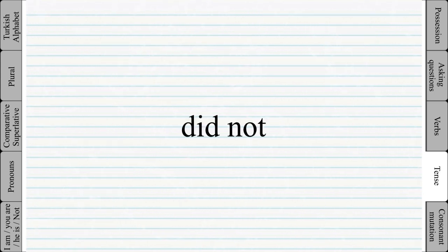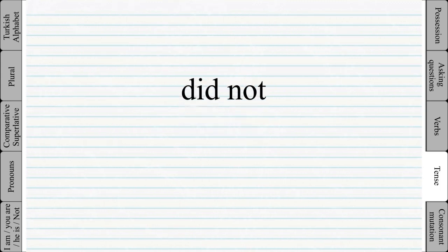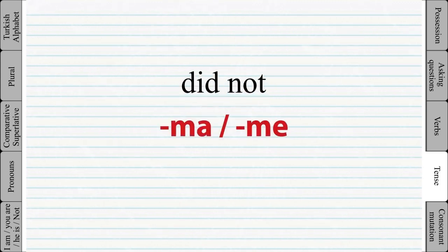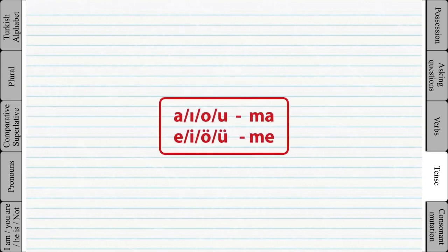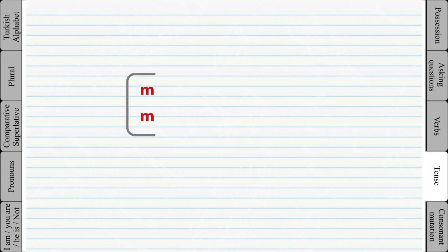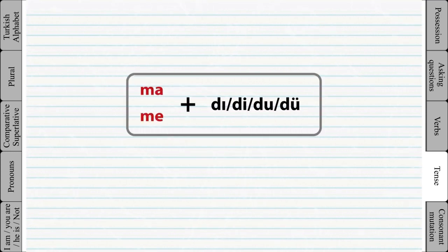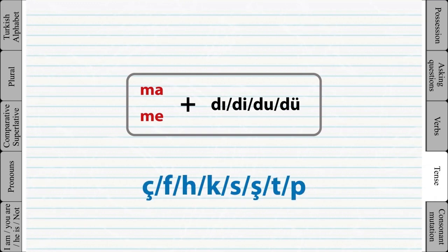By adding either -ma or -me we can negate past tense verbs — simply add -ma or -me at the end of the verb root. Note: we learned that we have to change the letter D to T if the last letter of the verb root is one of those letters. However, in the past tense when we add the negative -ma or -me, we don't have to change the last letter.